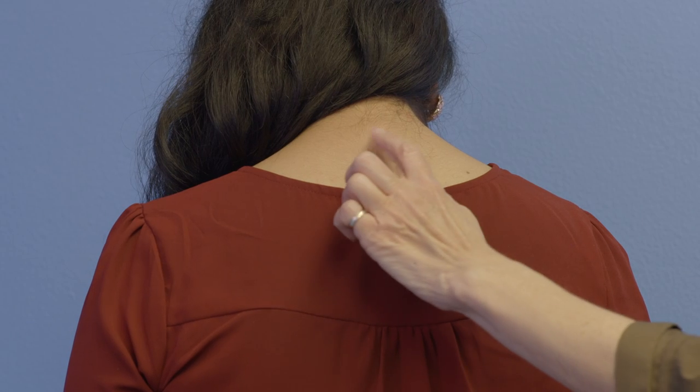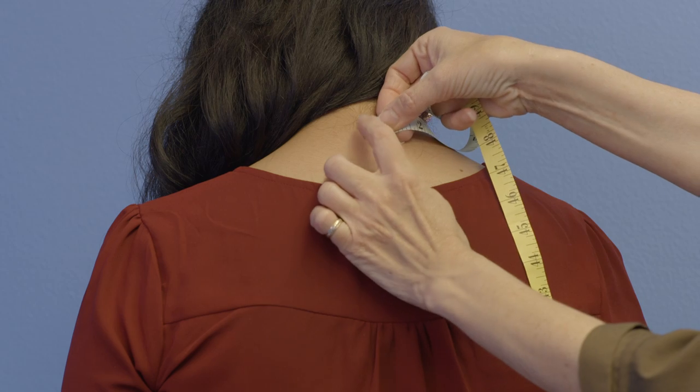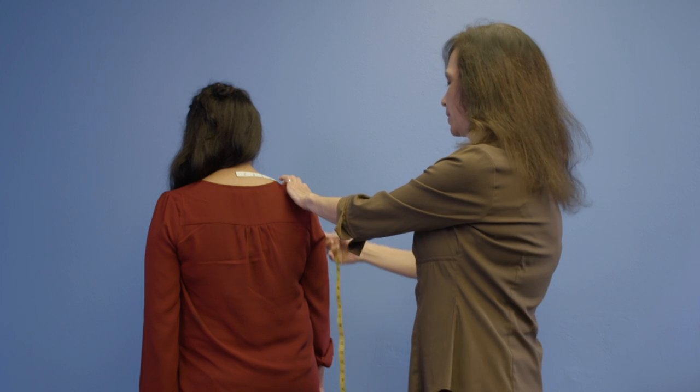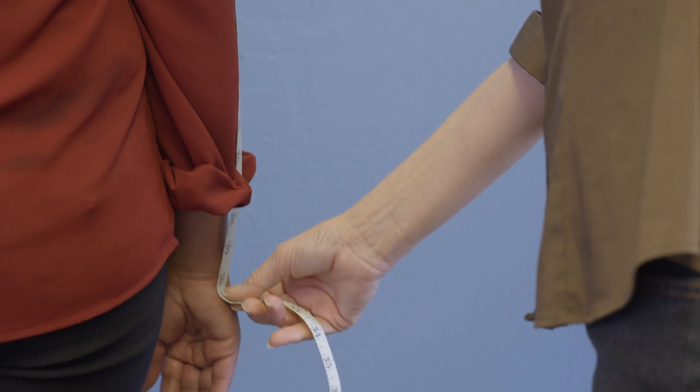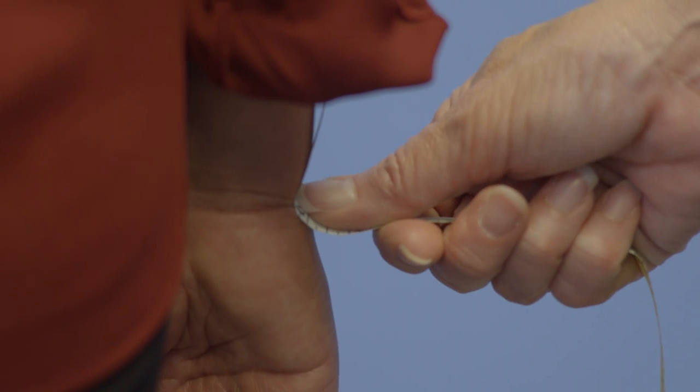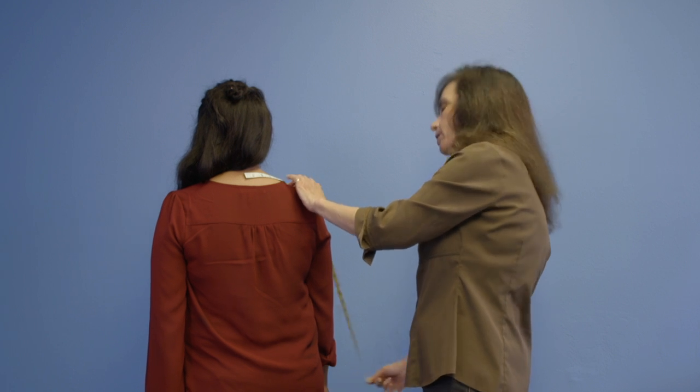Start at the top of the spine, at the nape of the neck where you feel a large bump. You're going to go to the tip of the shoulder and hold the tape there, and then take the tape all the way down the arm to the wrist bone. The arm needs to be relaxed down at the side and it's about 30 inches here on Sophia.